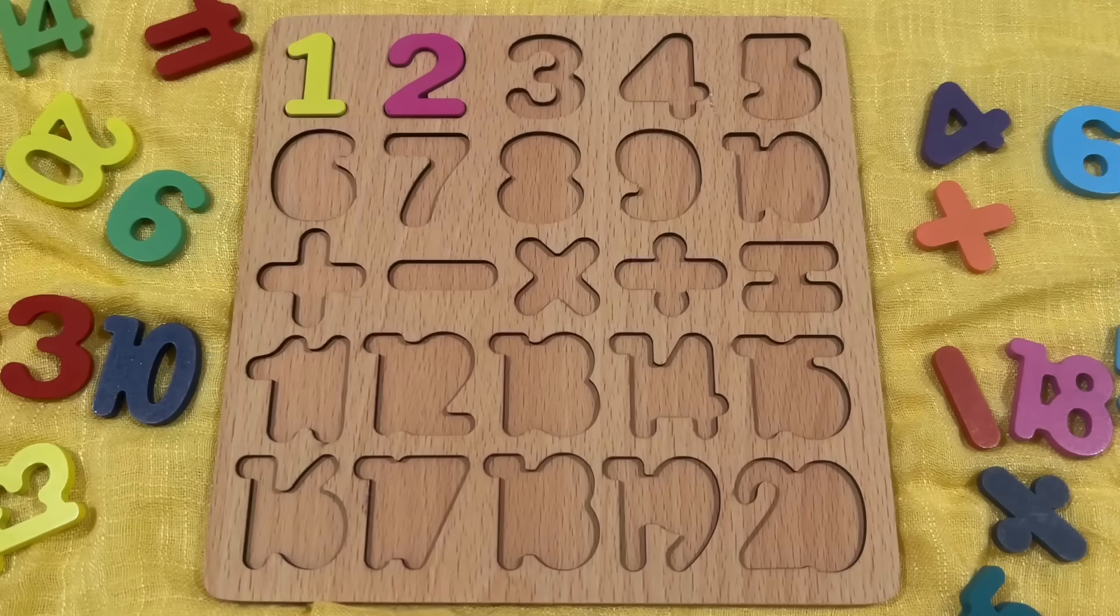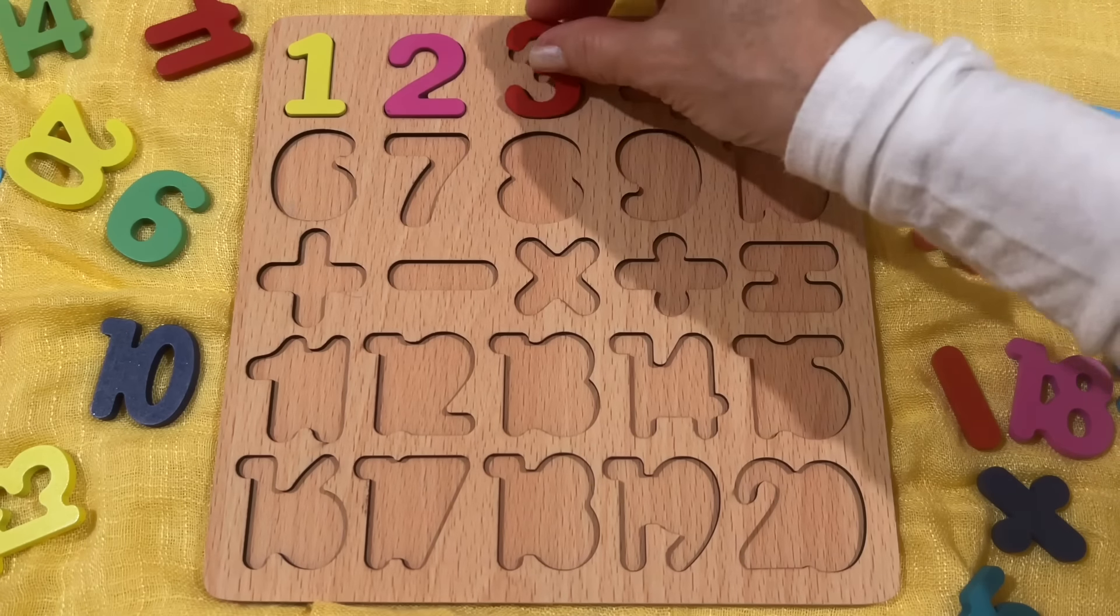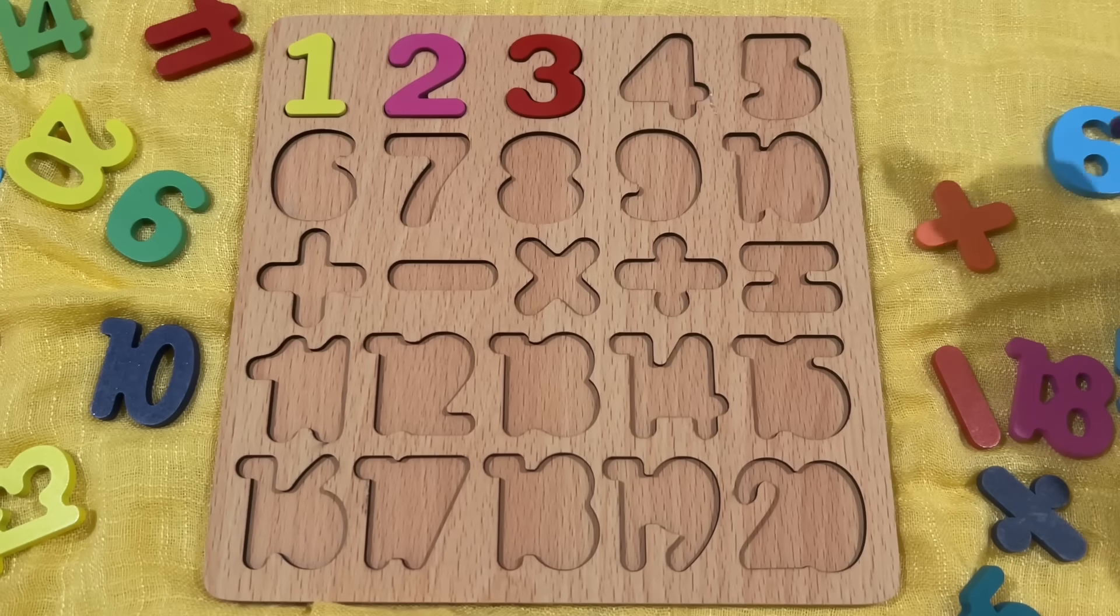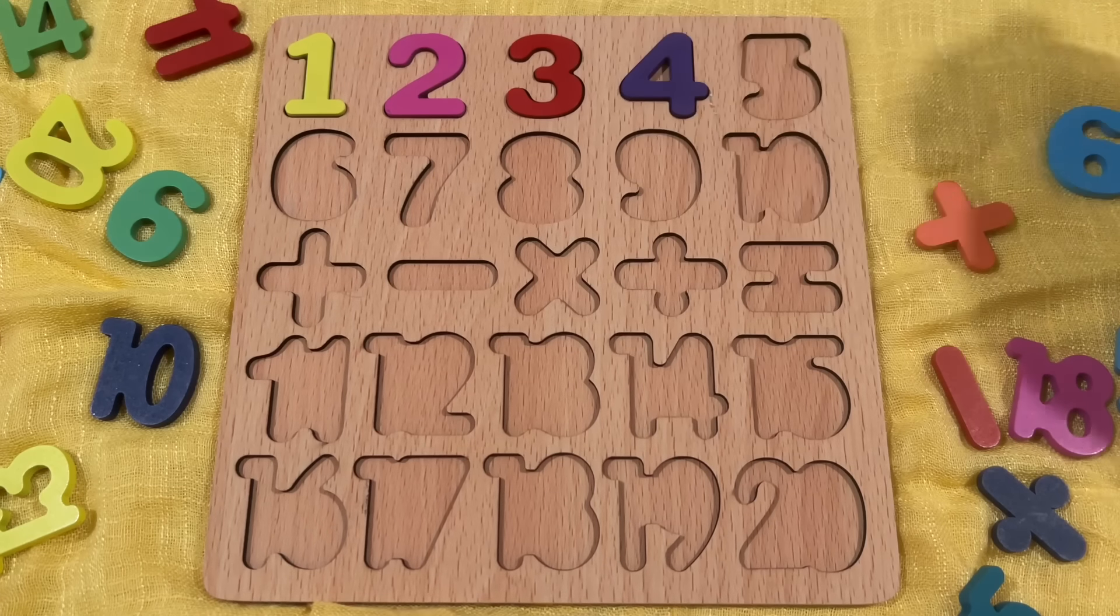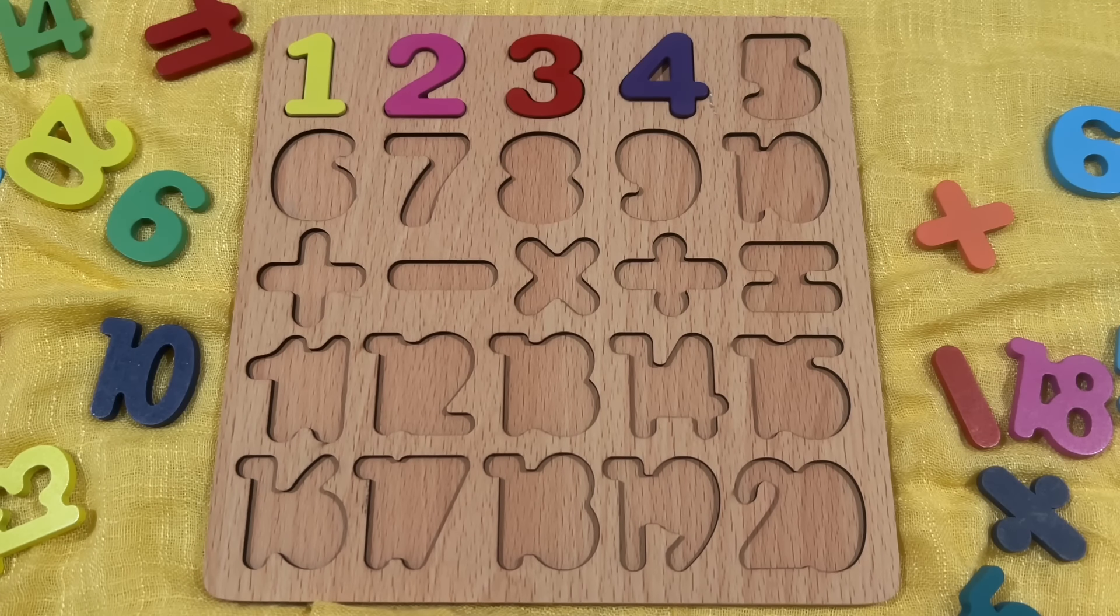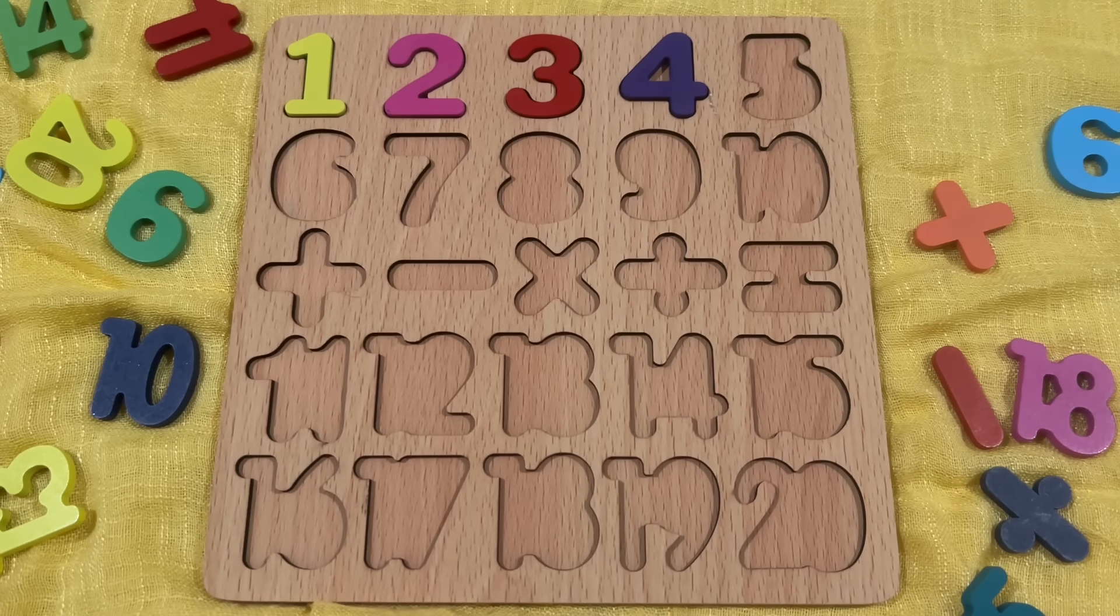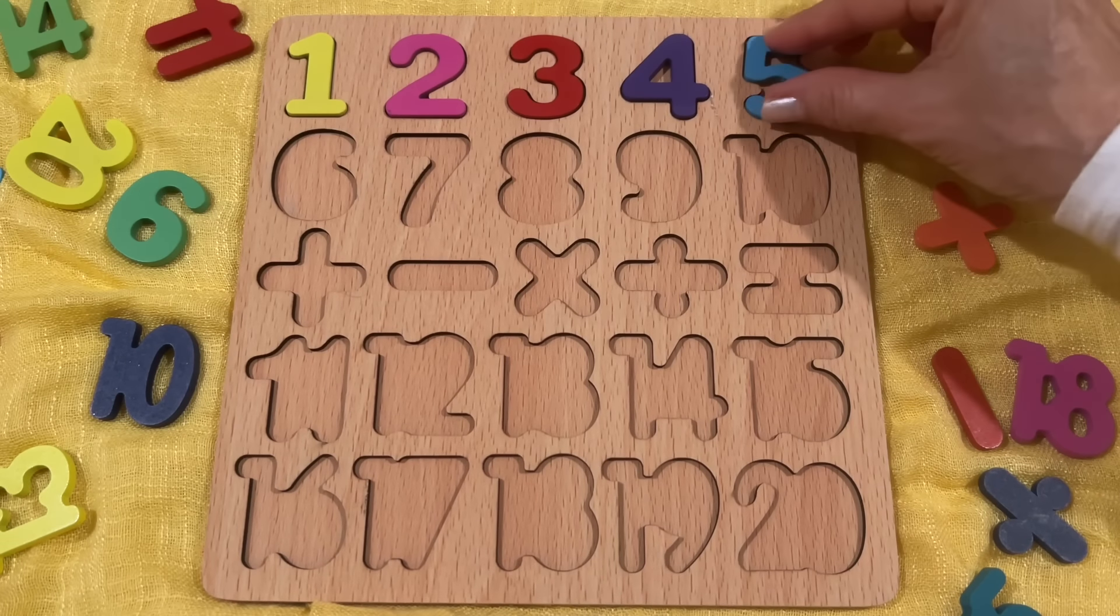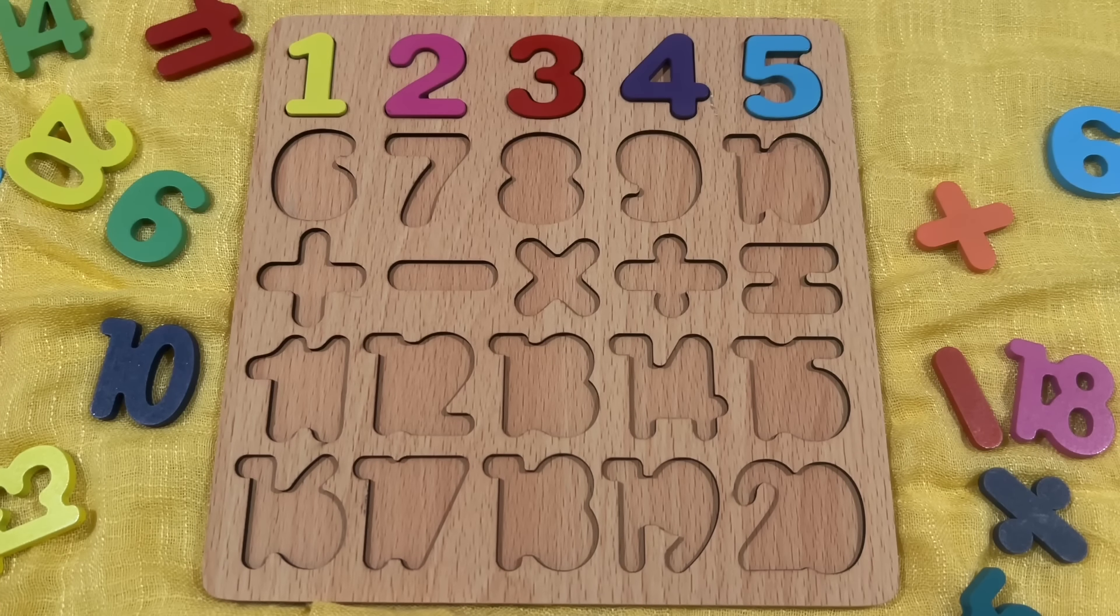What comes next? It's number three. Number three. In Korean, we say 삼 (sam). Do you know what comes next after three? It's number four. 사 (sa). In Korean, it's called 사. Number four. Next, it's number five. Five. Number five. Five in Korean is 오 (o).